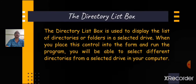The next common control in VB is the DirectoryListBox. The DirectoryListBox is used to display the list of directories or folders in a selected drive. The basic property of this control is the Path property, which is the name of the folder whose subfolders are displayed in the control. When you place this control into the form and run the program, you will be able to select different directories from a selected drive in your computer.